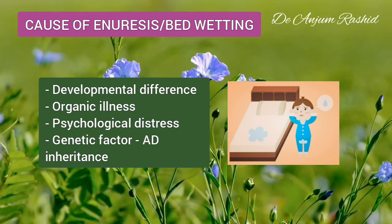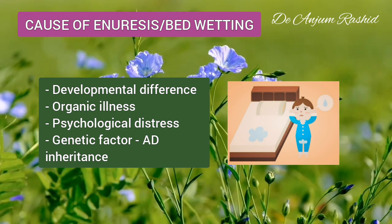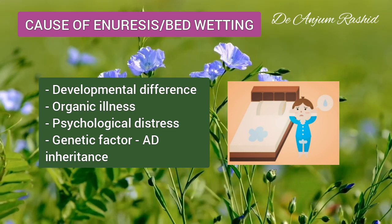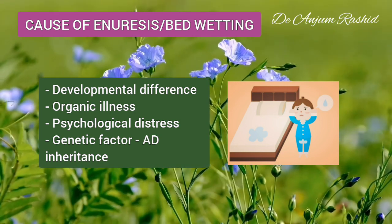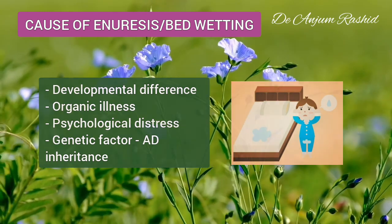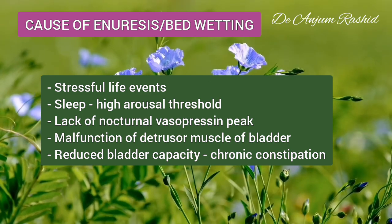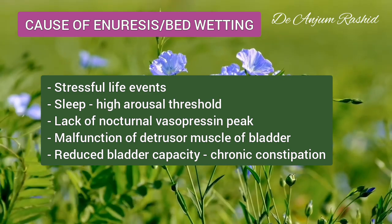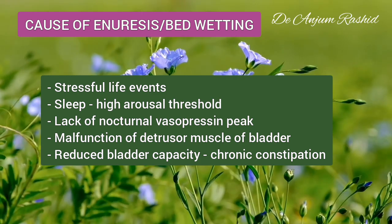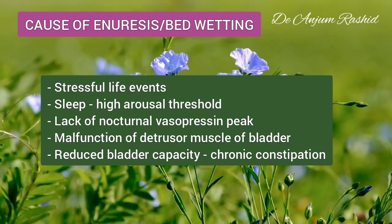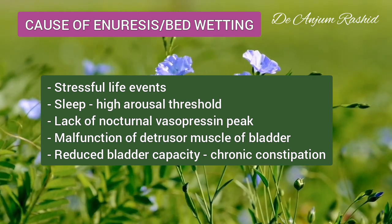Primary enuresis is often associated with a family history of delayed acquisition of bladder control. Nocturnal enuresis may have a genetic etiology with an autosomal dominant phenotypic pattern of inheritance. Although most children with enuresis do not have a psychiatric disorder, stressful life events can trigger loss of bladder control. Sleep physiology may also play a role in the etiology of nocturnal enuresis, and a high arousal threshold is commonly noted.